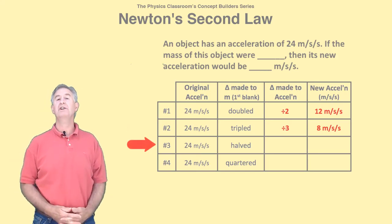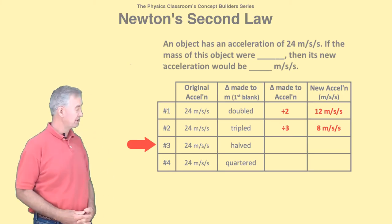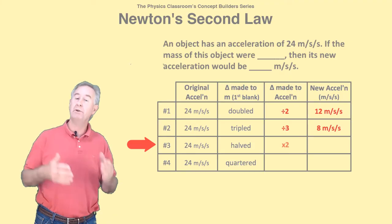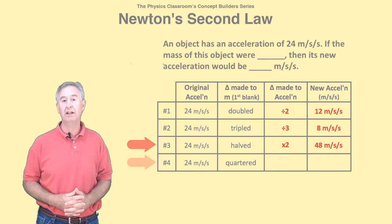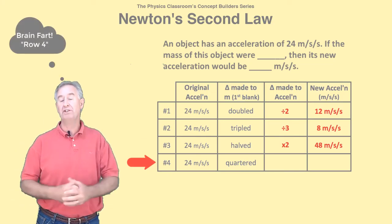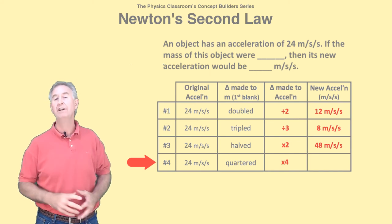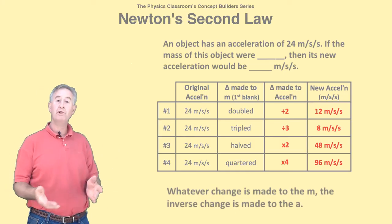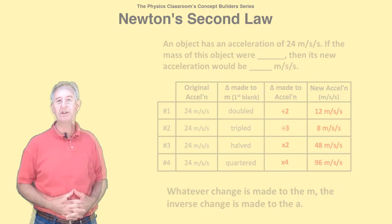In row number three, M is made smaller, so the acceleration must increase. We need a multiplying factor. Since M is one-half the size — divided by two — we're going to take 24 and multiply by two to get 48 meters per second per second. In row number four, M is quartered, that is one-fourth the size. We need to take 24 and multiply by four to get 96 meters per second per second. Notice that in each row, whatever change was made to M, the inverse change was made to the acceleration.